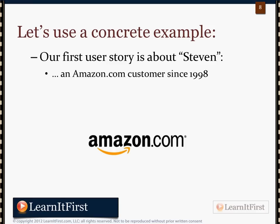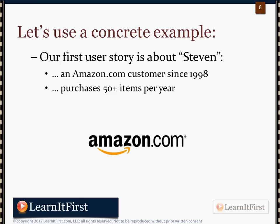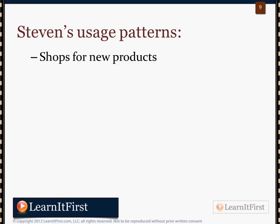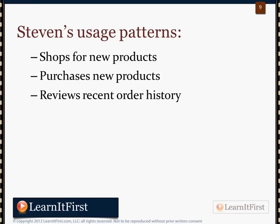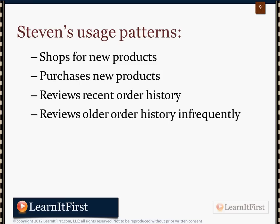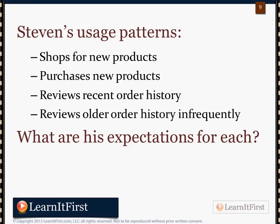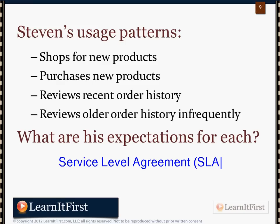Let's use a concrete example. Our first user story is about Steven. Steven has been an Amazon.com customer since 1998 and purchases over 50 items a year, considering himself a power user. His usage patterns include shopping for new products, purchasing products, reviewing recent order history, and reviewing older history infrequently — maybe once a year around the holidays to see what he bought someone the previous year.